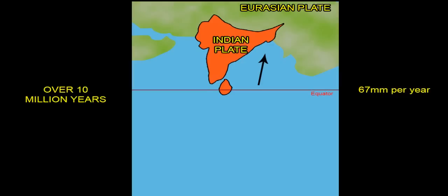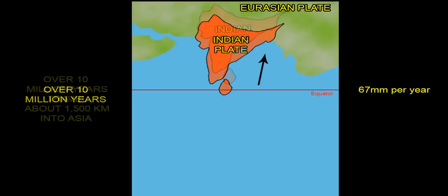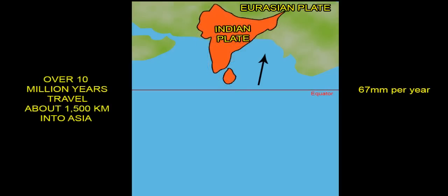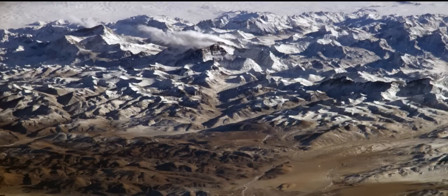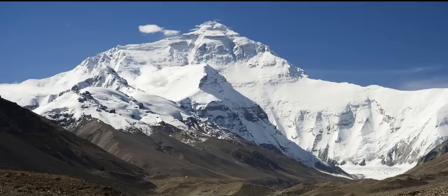The Indian plate is still moving at 67 millimeters per year horizontally below the Tibetan plateau, which forces the plateau to continue moving upwards. It will travel about 1,500 kilometers into Asia over the next 10 million years. By thrusting along the Himalaya's southern front, about 20 millimeters per year of the India-Asia convergence is absorbed.